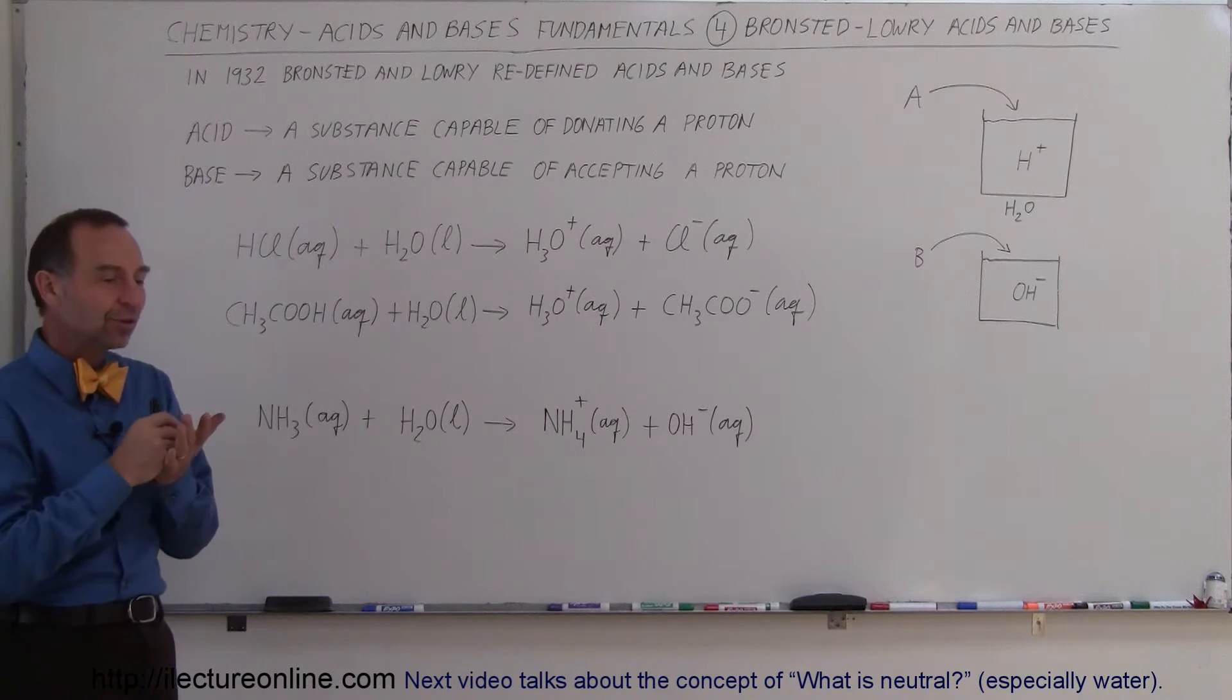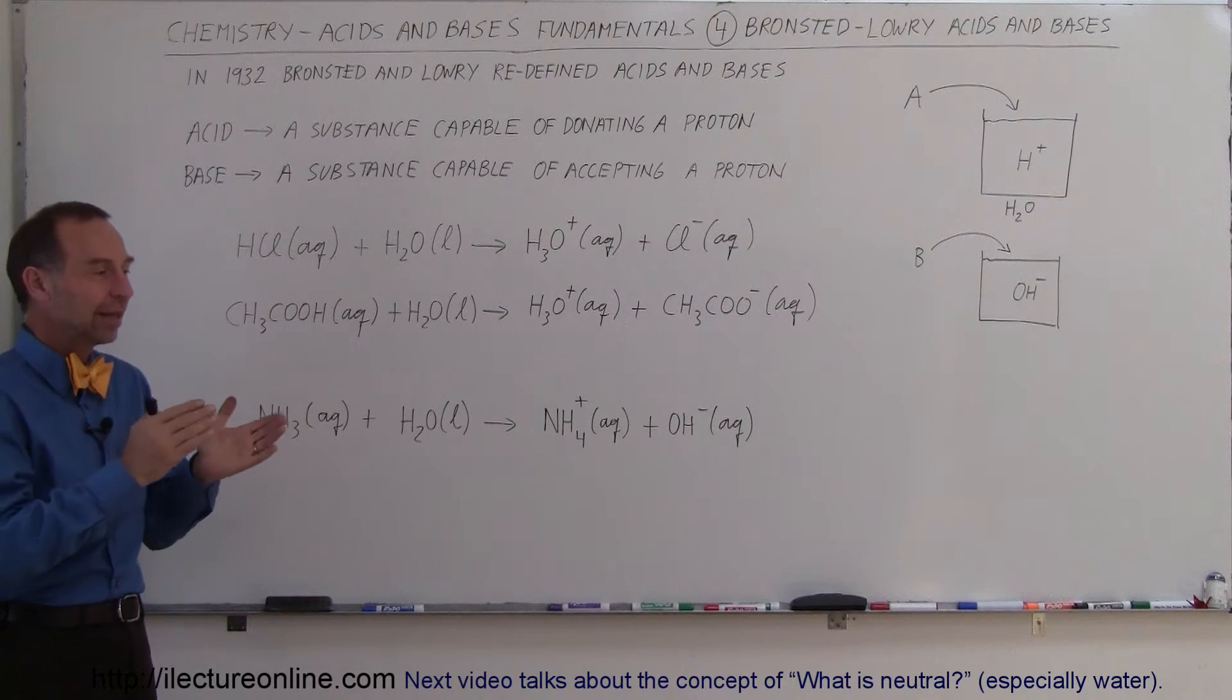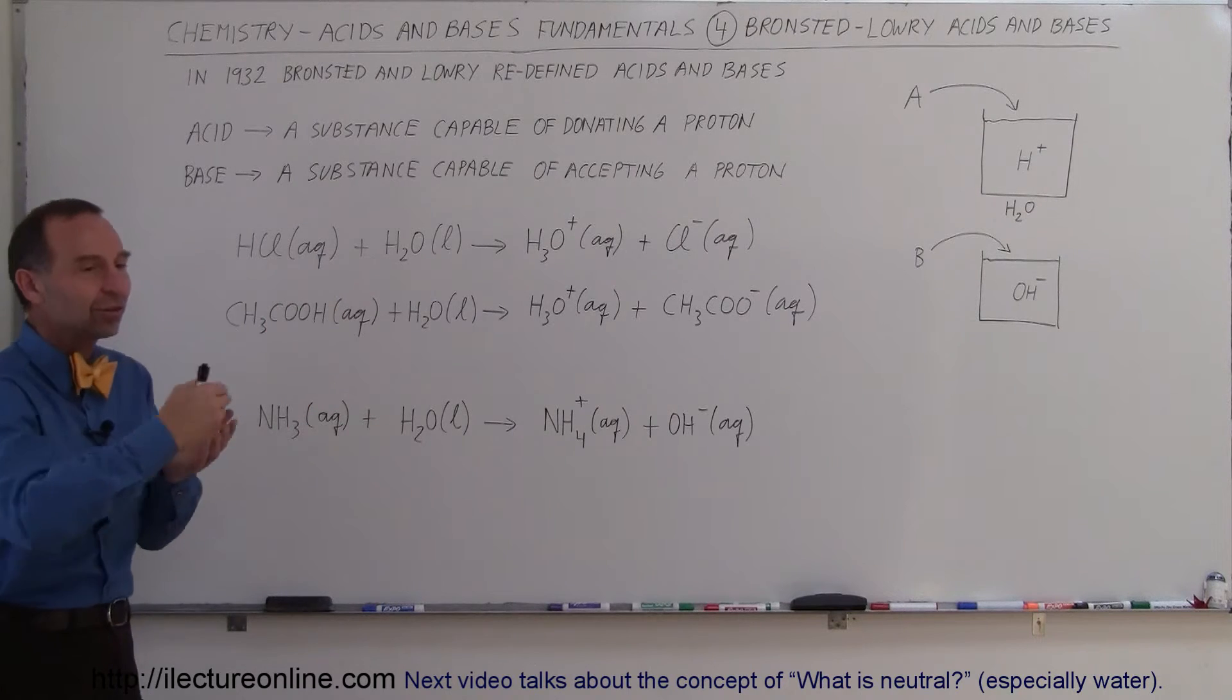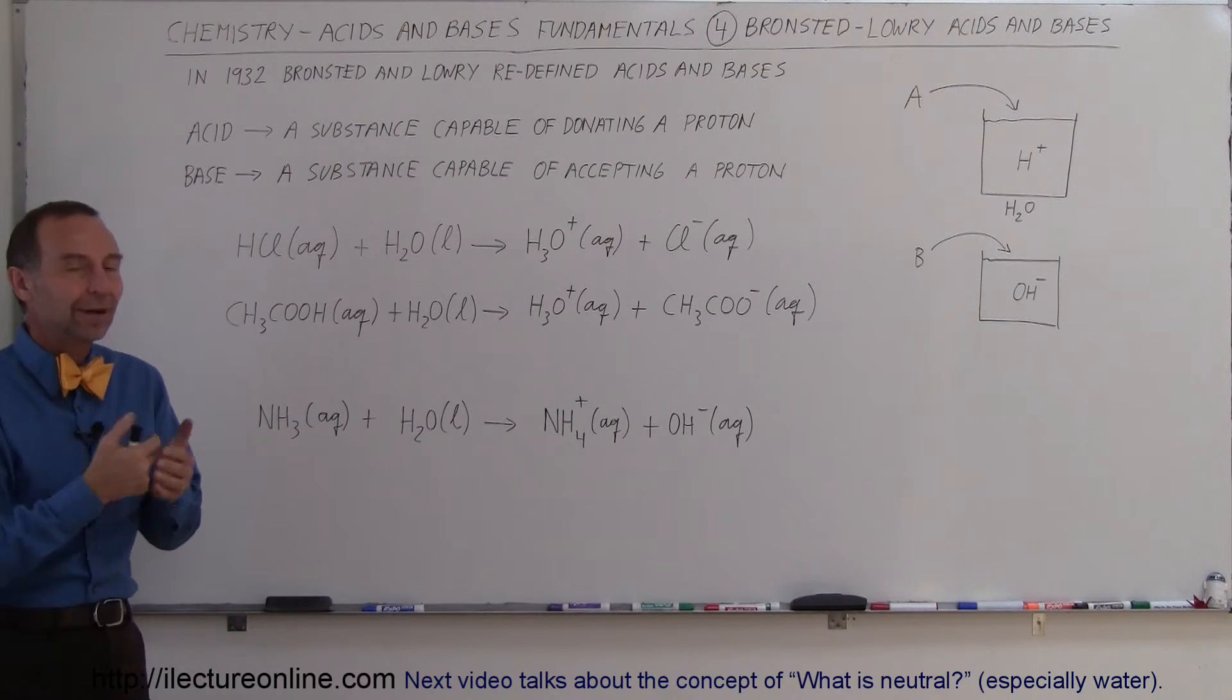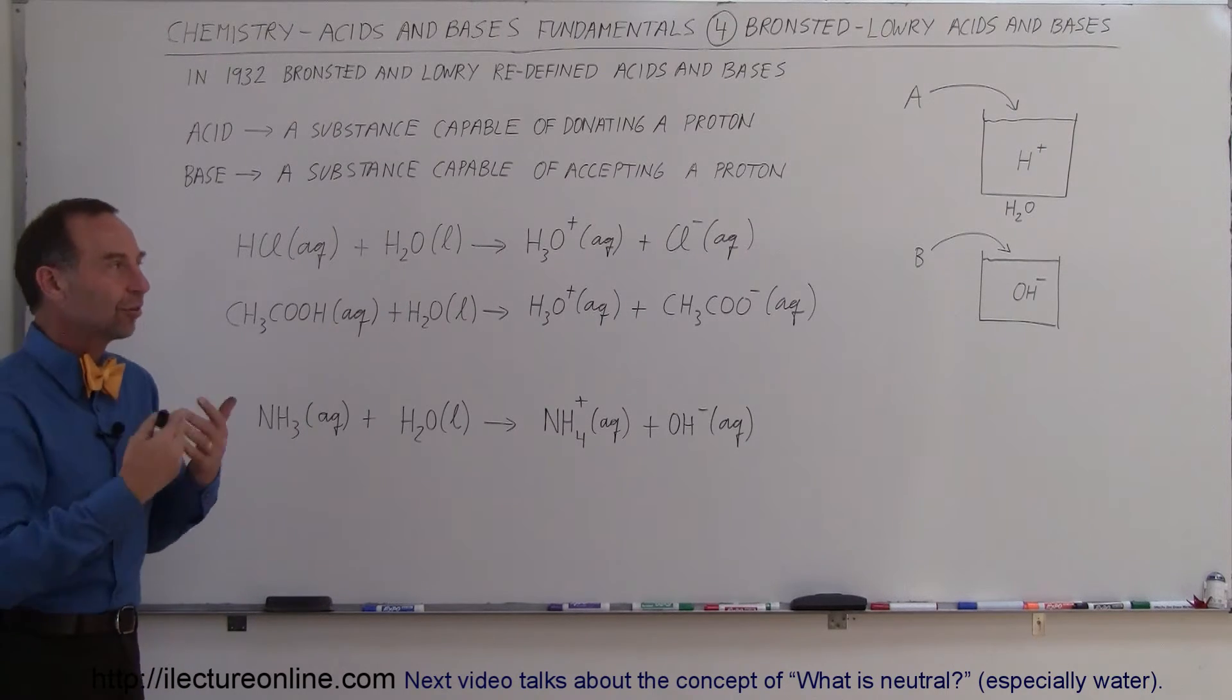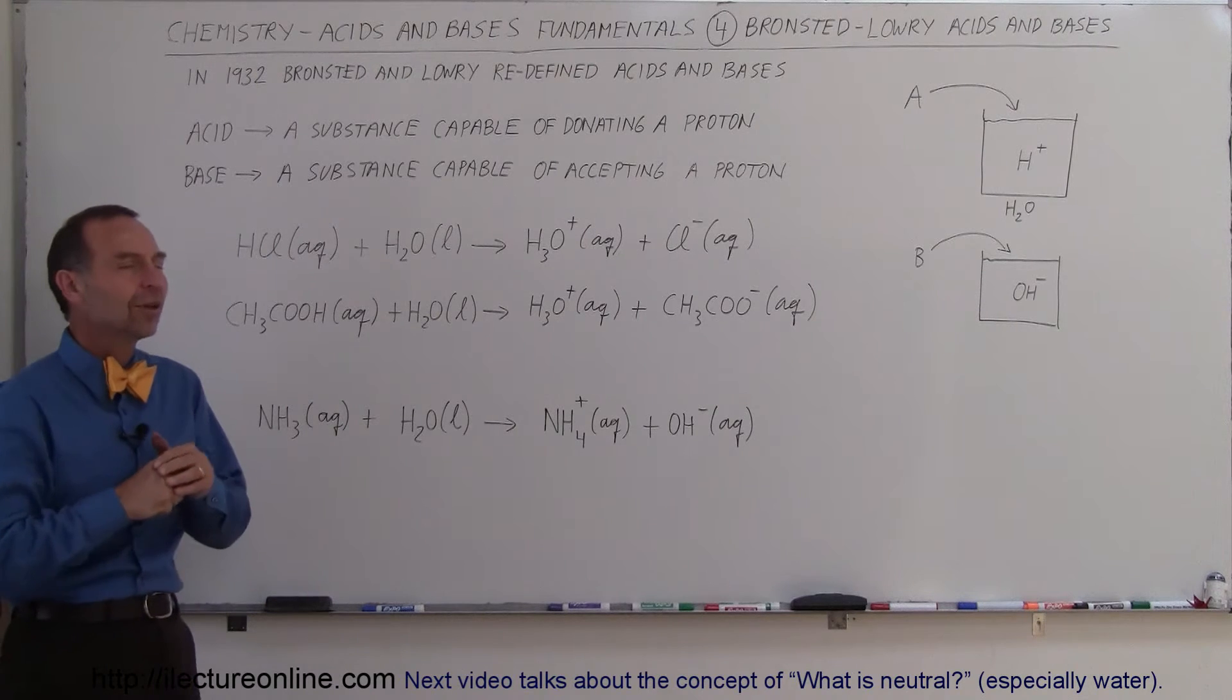In the previous video, we saw that Svante Arrhenius came up with a simple explanation: an acid liberates a proton or hydrogen ion, and a base liberates hydroxide ions, such that you end up with an excess of hydrogen ions for the acid and hydroxide ions for the base.